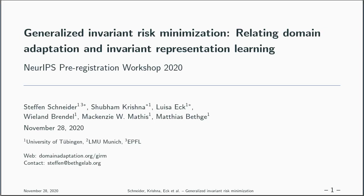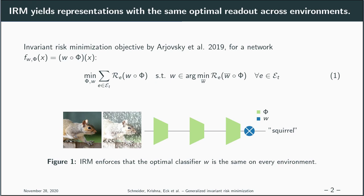Welcome to our presentation on generalized invariant risk minimization. We consider the problem of learning representations that generalize across multiple data domains. To this end, invariant risk minimization has been proposed, which finds representations that can't be fine-tuned further by adapting the last layer of a deep neural network, thereby discouraging reliance on unstable features.